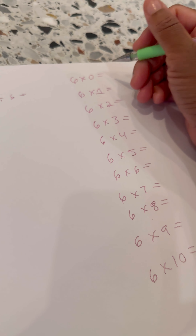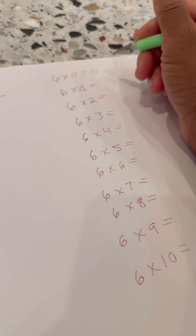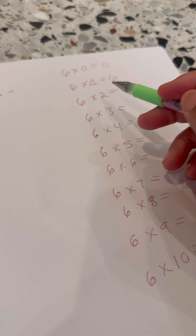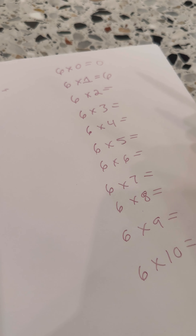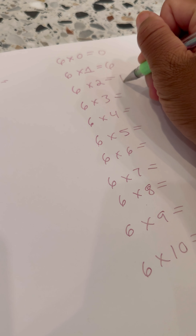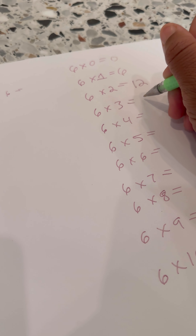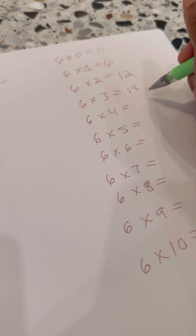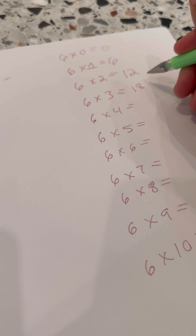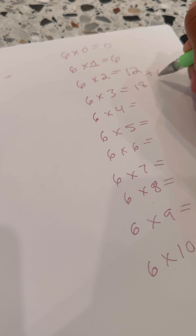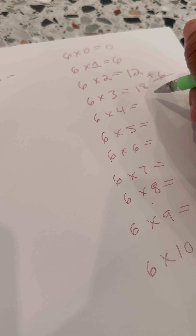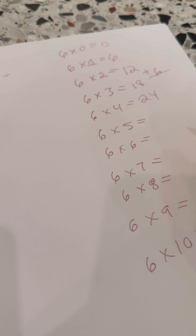6 times 0 is 0 because anything times 0 is 0. 6 times 1 is 6 because anything times 1 is that number — you only got one of that thing. 6 times 2 is 12. 6 times 3 is 18. And if it got confusing, I'd say, McIntyre, what's 12 plus 6? All multiplication is is 12 plus 6 more. He'd say 18. And then what's 18 plus 6 more? That's 24, Mom.